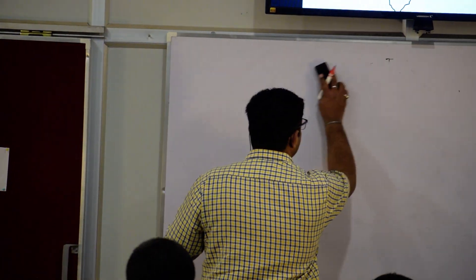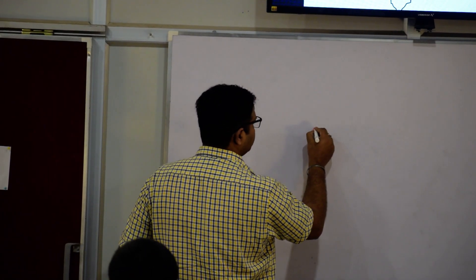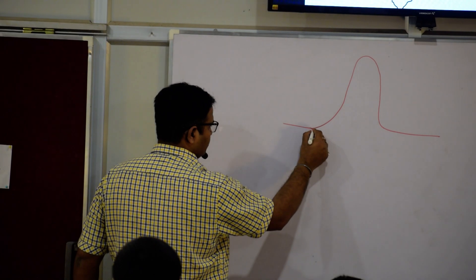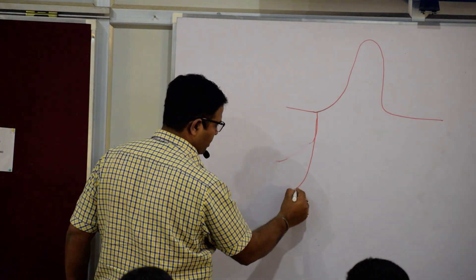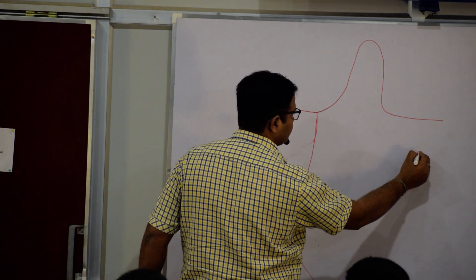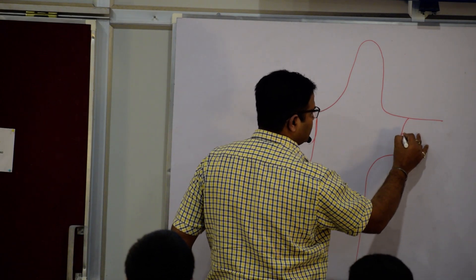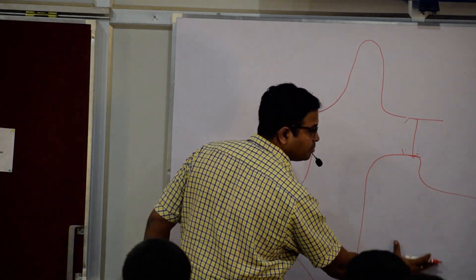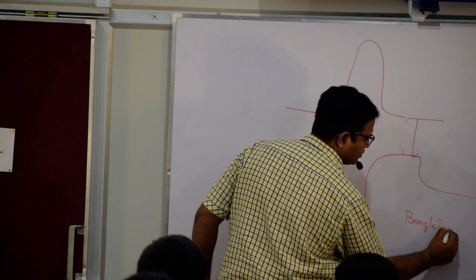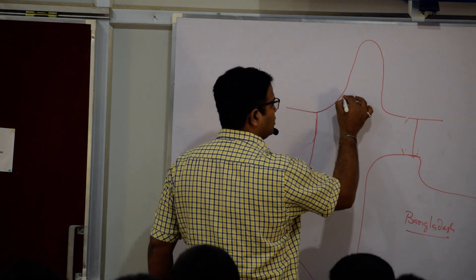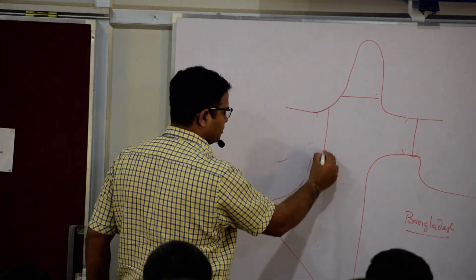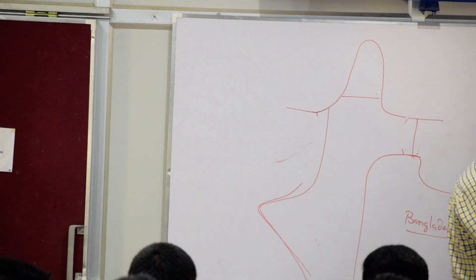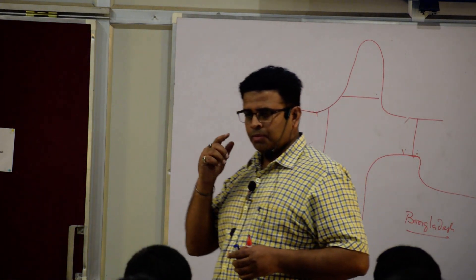This is Assam. This side is Assam and Meghalaya. This is Bangladesh. And this is Sikkim. And this is West Bengal. Got it? And here you will see six. How many? Six.